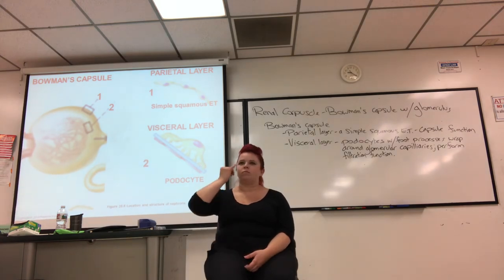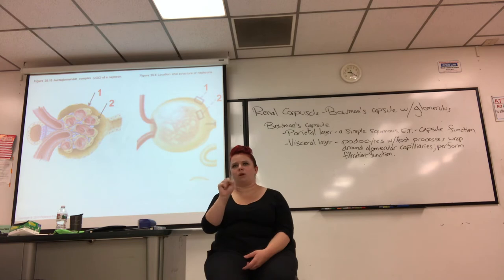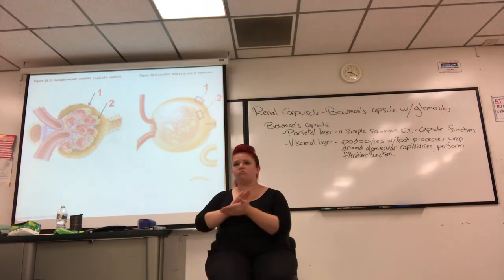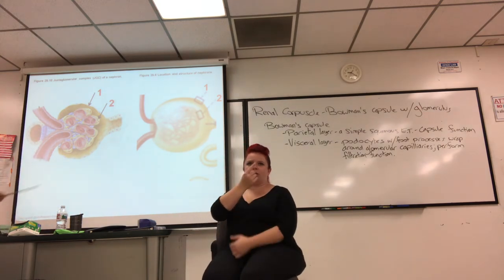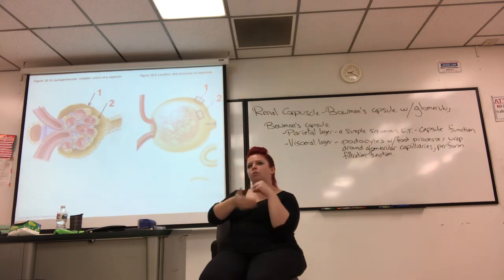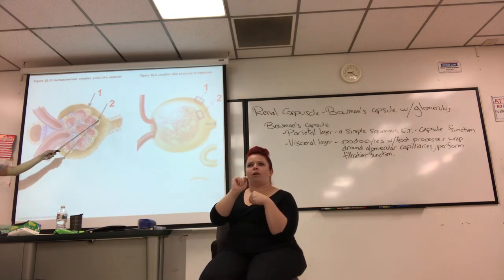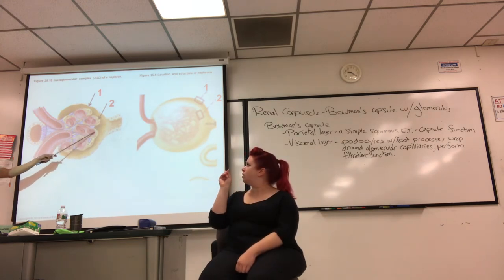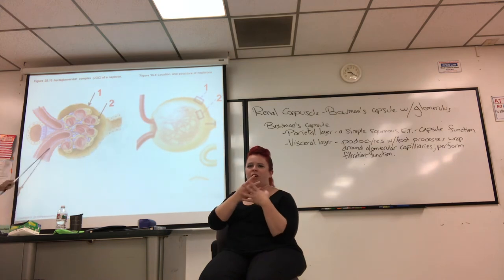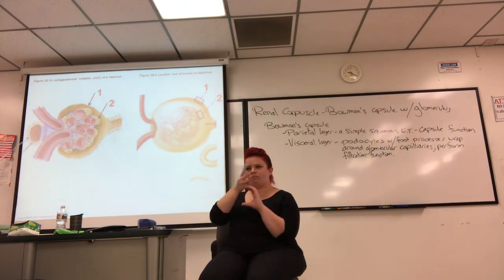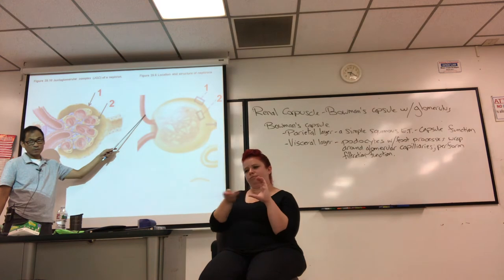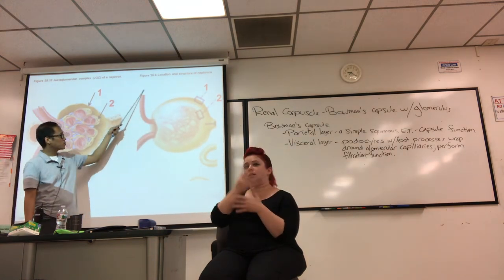If you cut open the renal corpuscle, you can identify layer one — the parietal layer — and layer two — the visceral layer. You can identify the RBCs in the glomerular capillaries; they're way too big to be filtered out, so they go in afferent and out efferent. In this figure the afferent arteriole comes in, the efferent goes out. What is not filtered goes to the efferent arteriole; what makes it through the filter is pushed to the PCT.